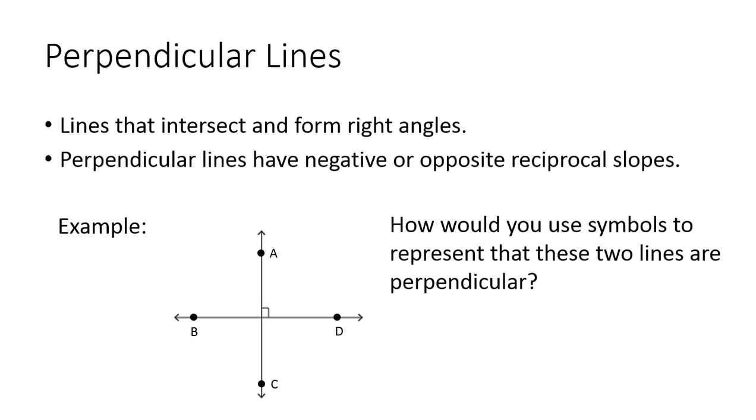Next, we have perpendicular lines. They are lines that intersect and form right angles. Perpendicular lines have negative or opposite reciprocal slopes. We'll be looking more into that later. So in this example, I am showing you two lines that are intersecting and forming right angles. They actually form four right angles, even though only one of them is shown with this symbol right here. That's how you show right angles on a diagram.